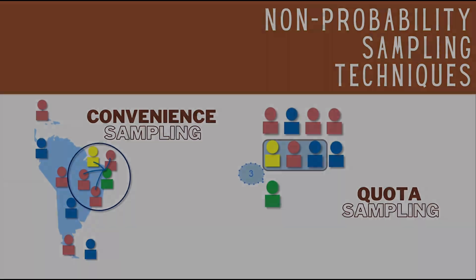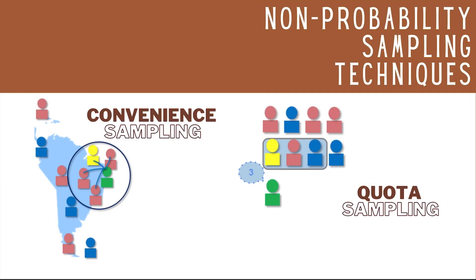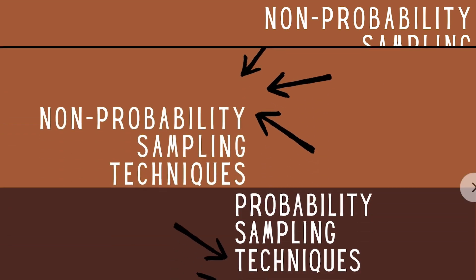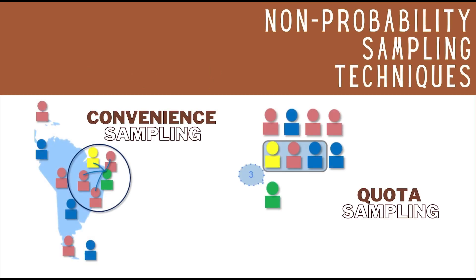Unahin natin ang mga non-probability sampling techniques. Convenience sampling is a sampling technique wherein the selection of group of individuals are based on suitability and convenience of the individual. It's also called accidental sampling. Kung sino lang ang lalapit at malapit, sila ang magiging sample. Let's say the study is about collecting response regarding the experience of people right after visiting Museo ng Montilupa. You may schedule a visit on Museo ng Montilupa and ask or do survey or interview to people who are free and available at that time.